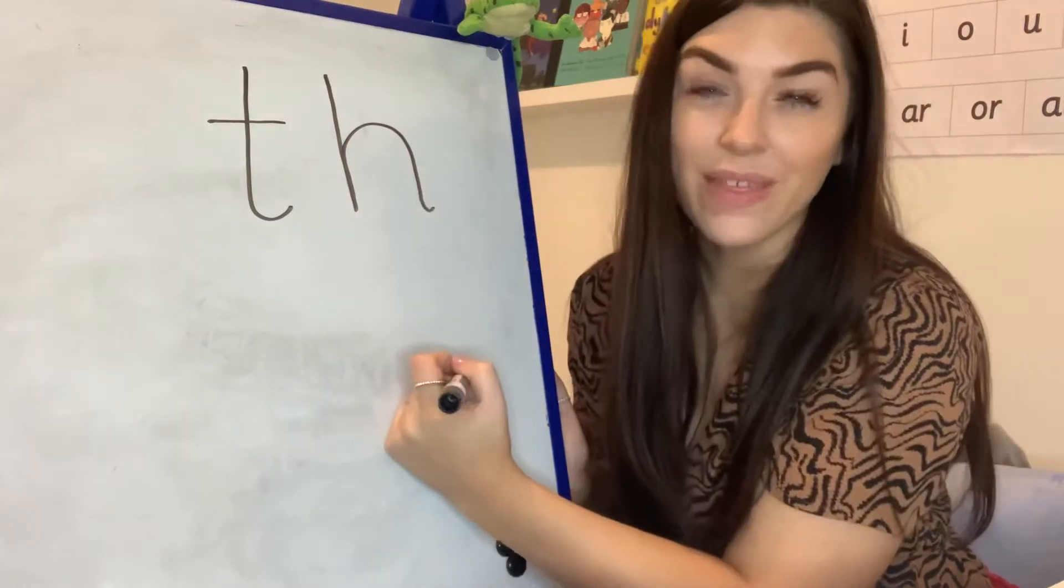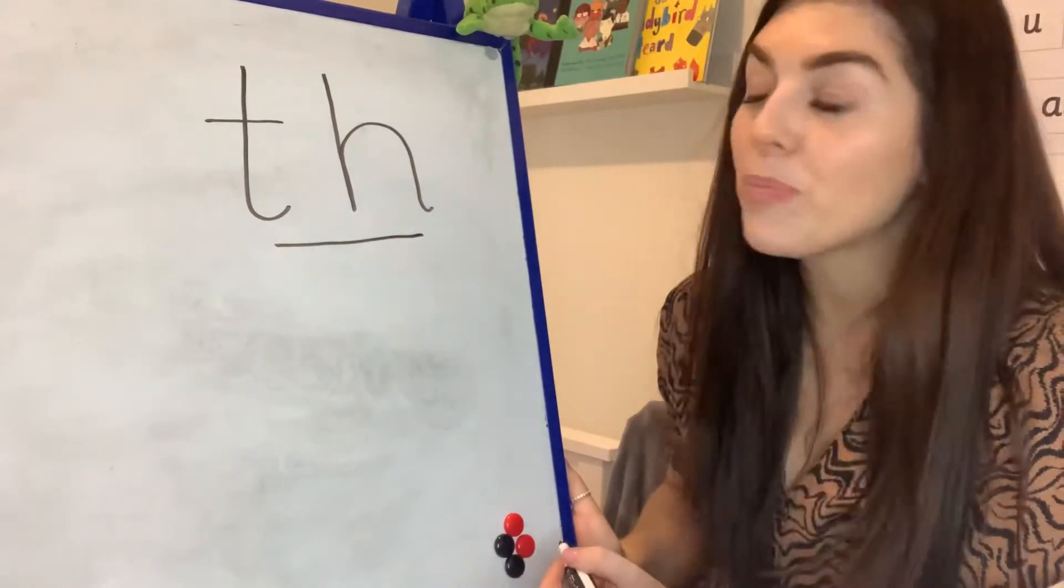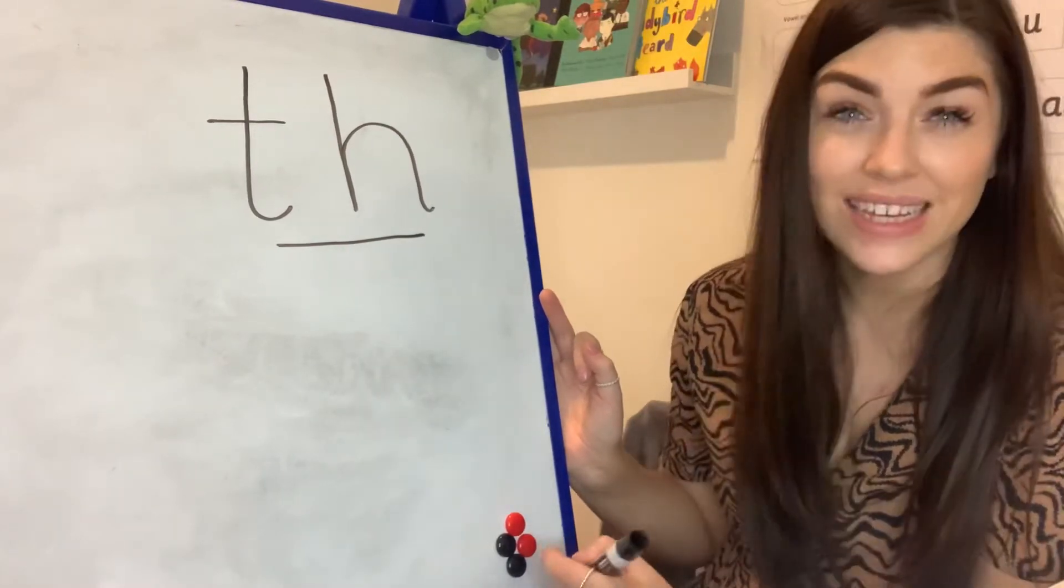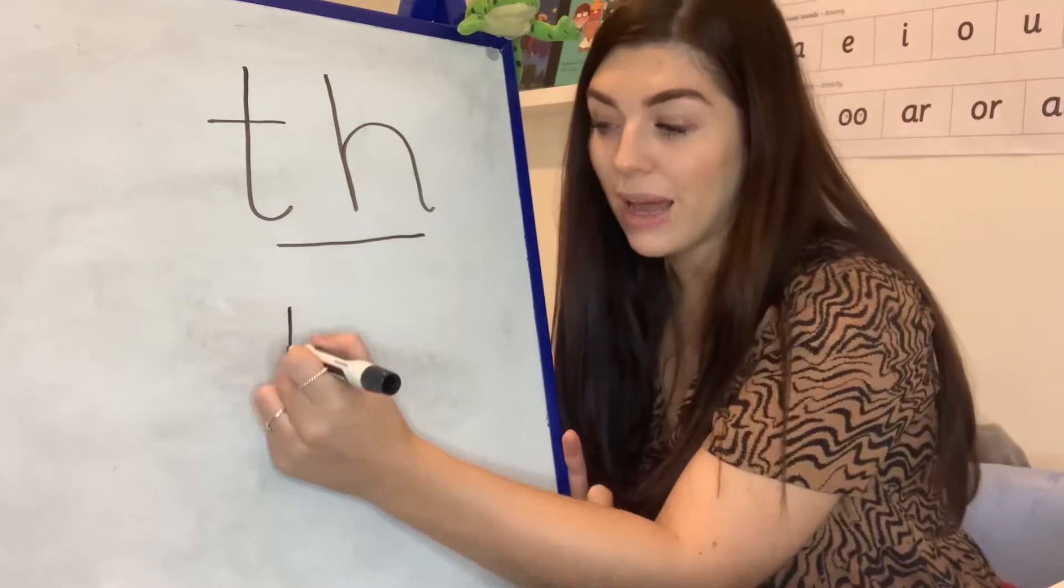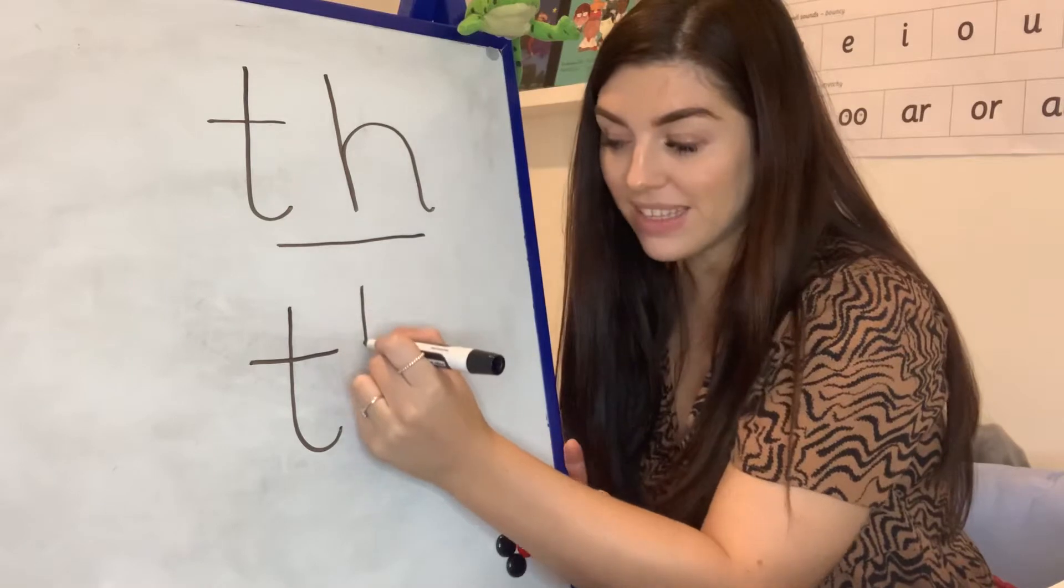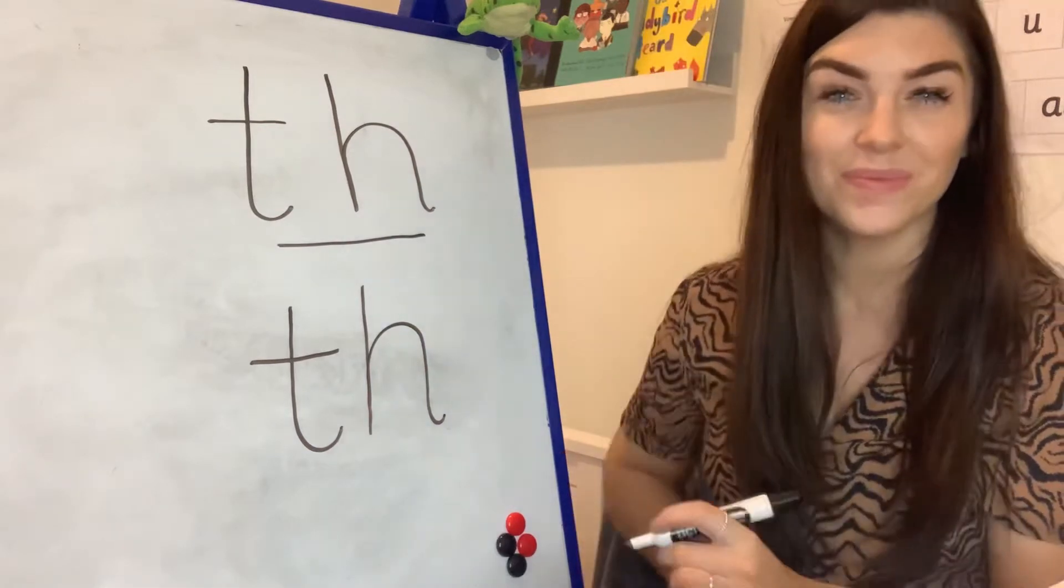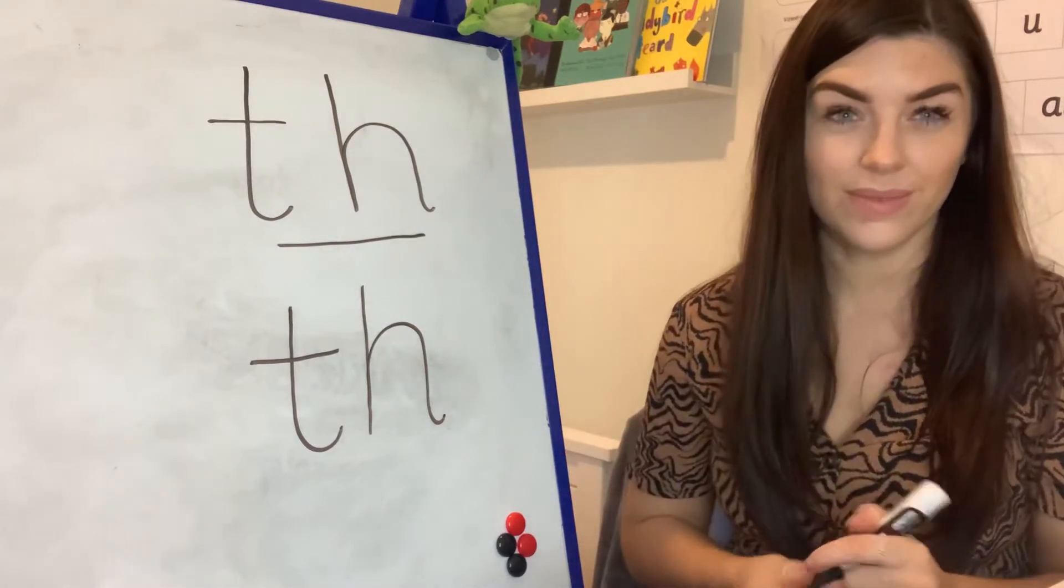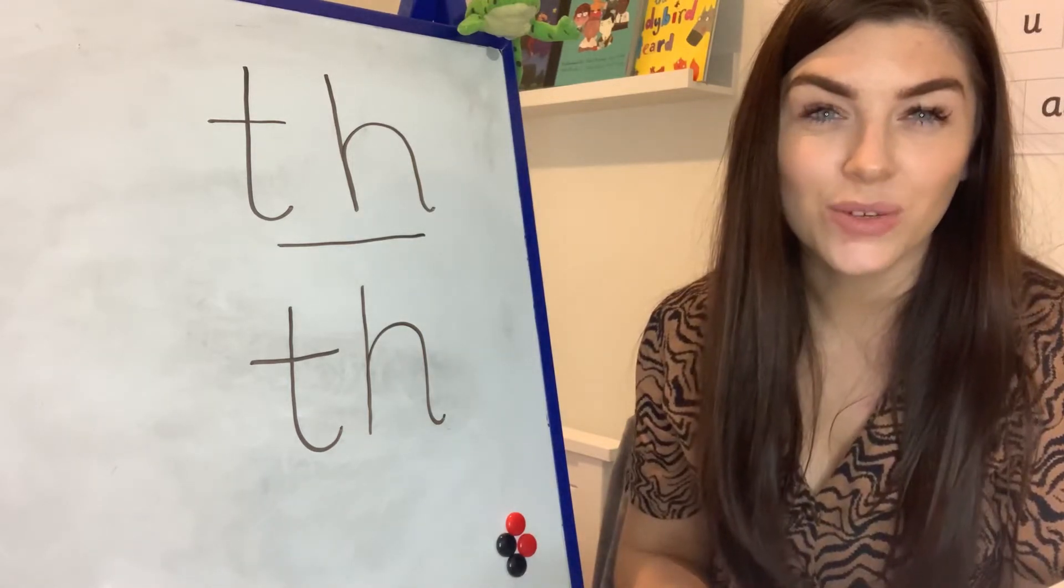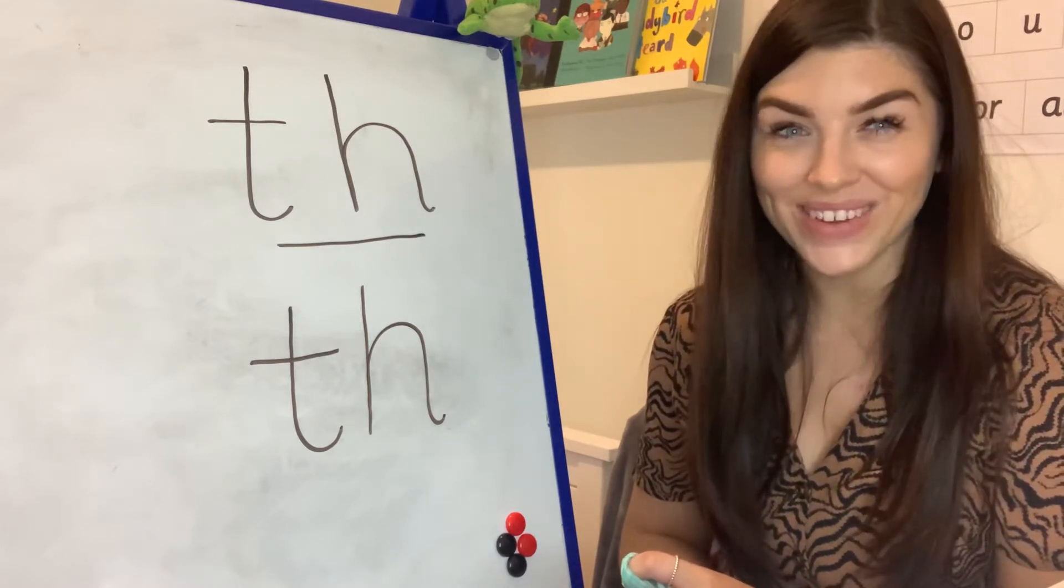Those two letters together make the th sound. I want you on your paper to practice writing the th sound three times. Can you do that now for me? Down the tower, across the tower. Down his head to his hooves and over the horse's back. Well done everybody, super work. You're all doing a brilliant job. When you've done three pop your pencil down and look this way.